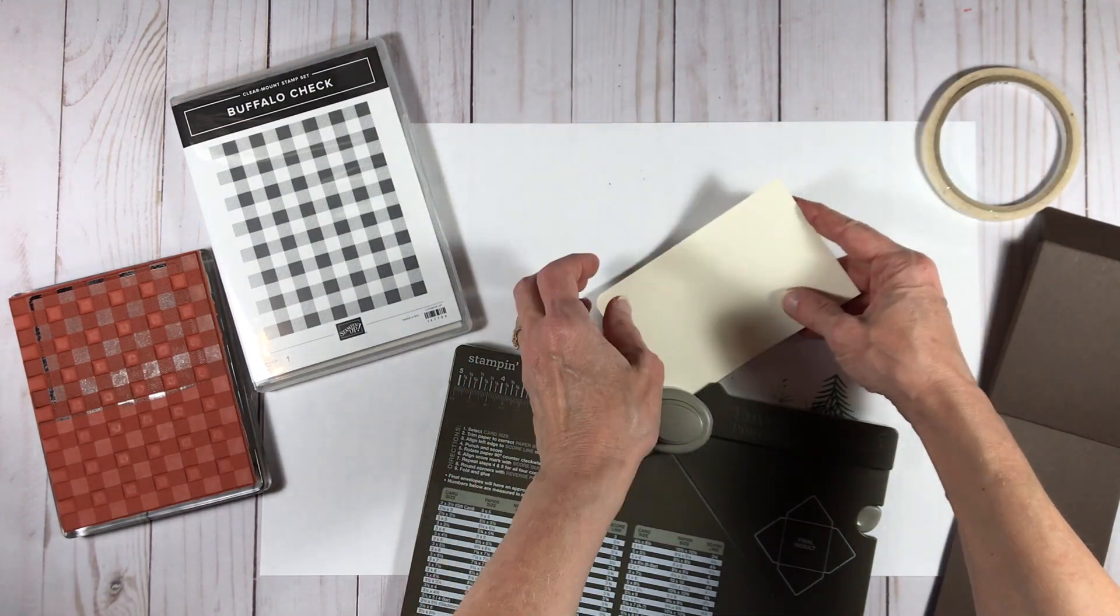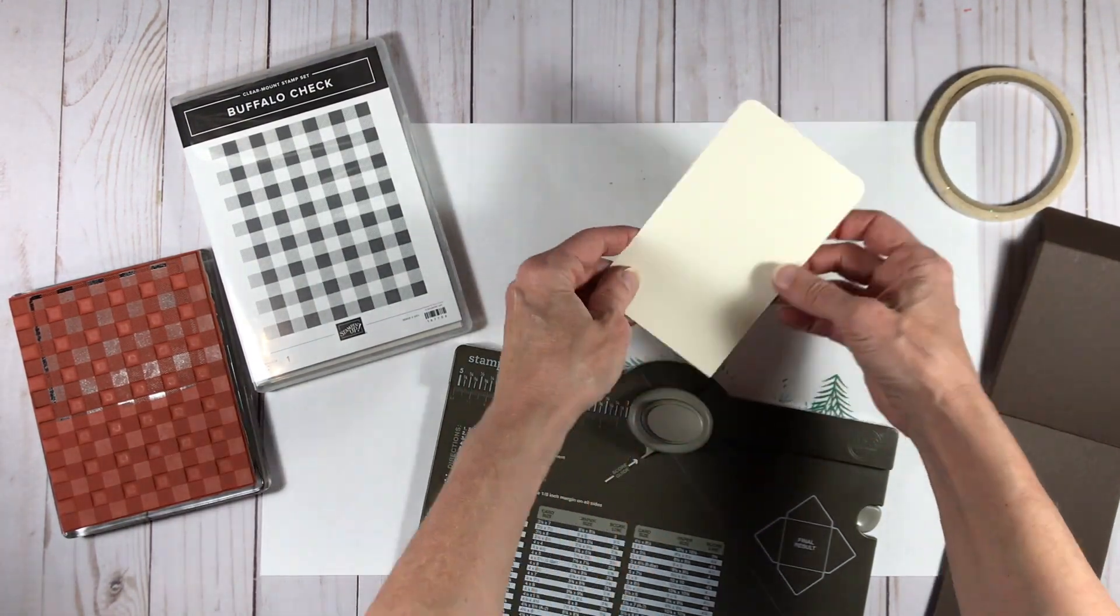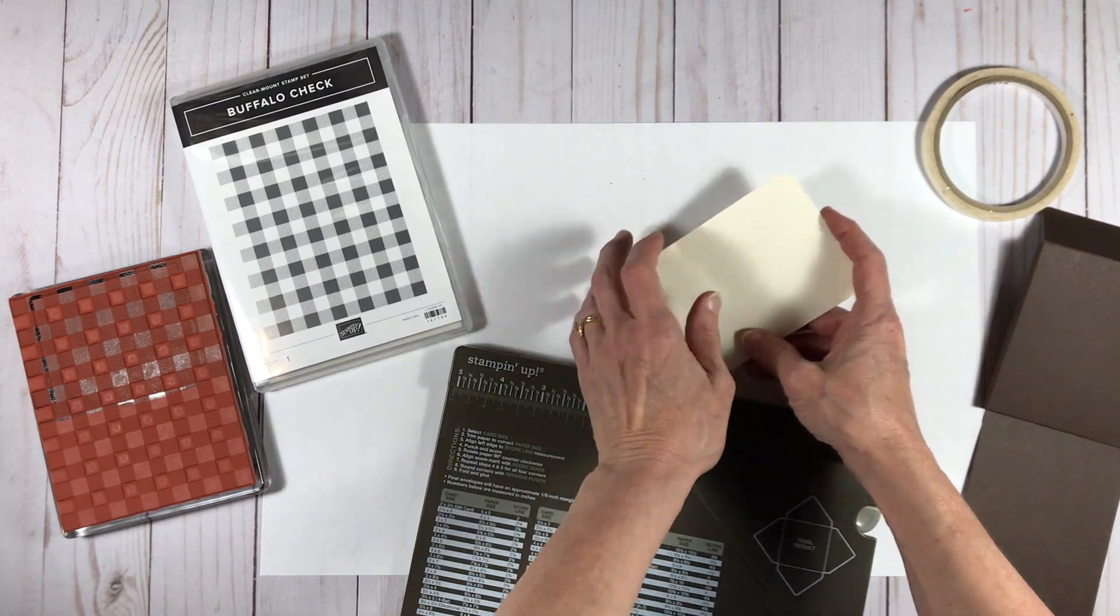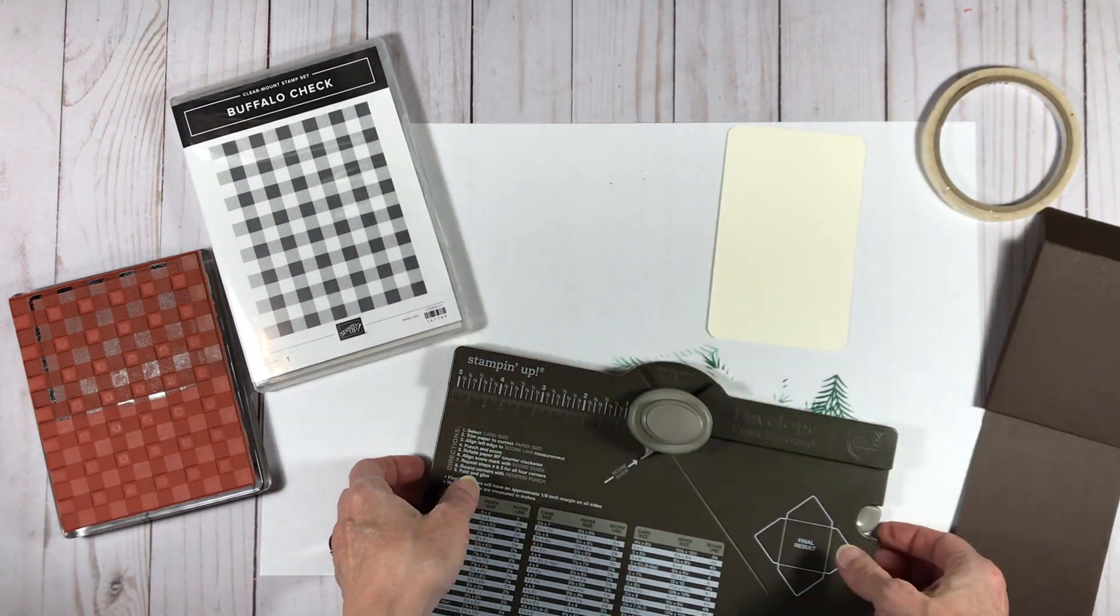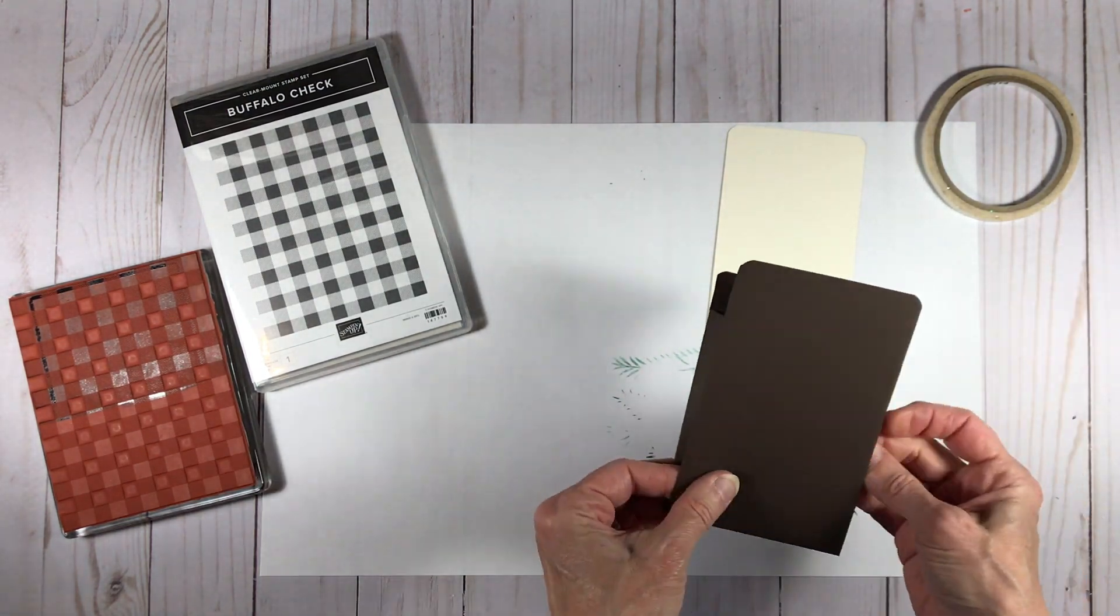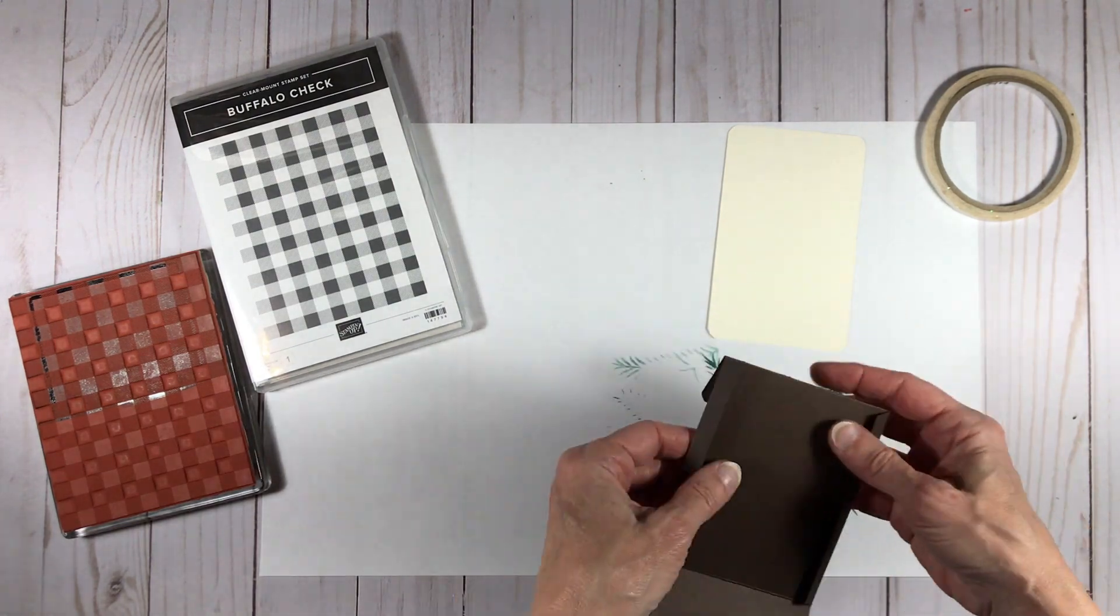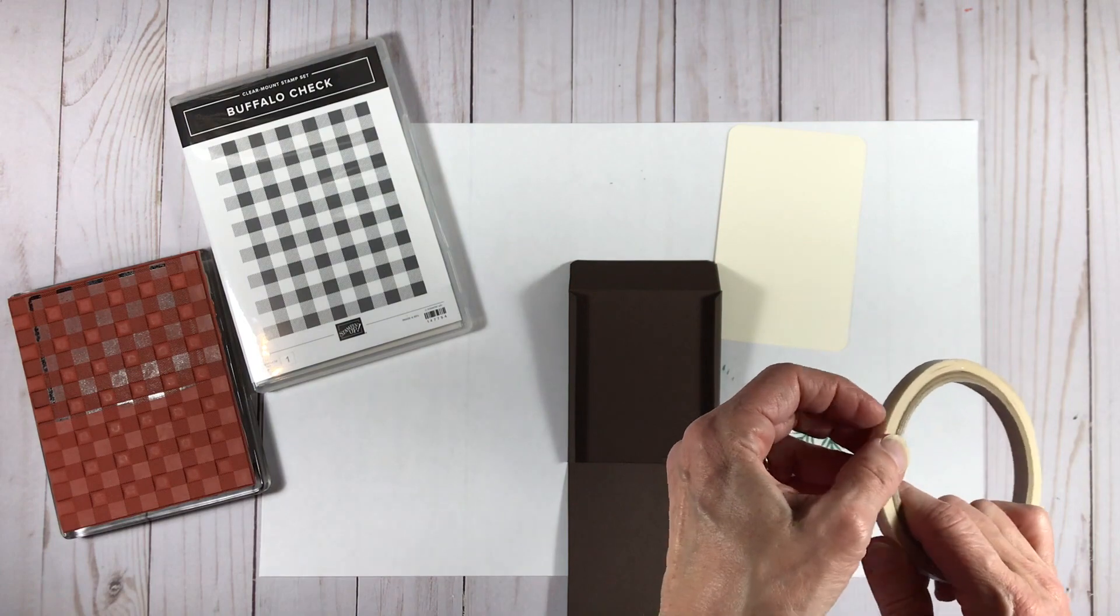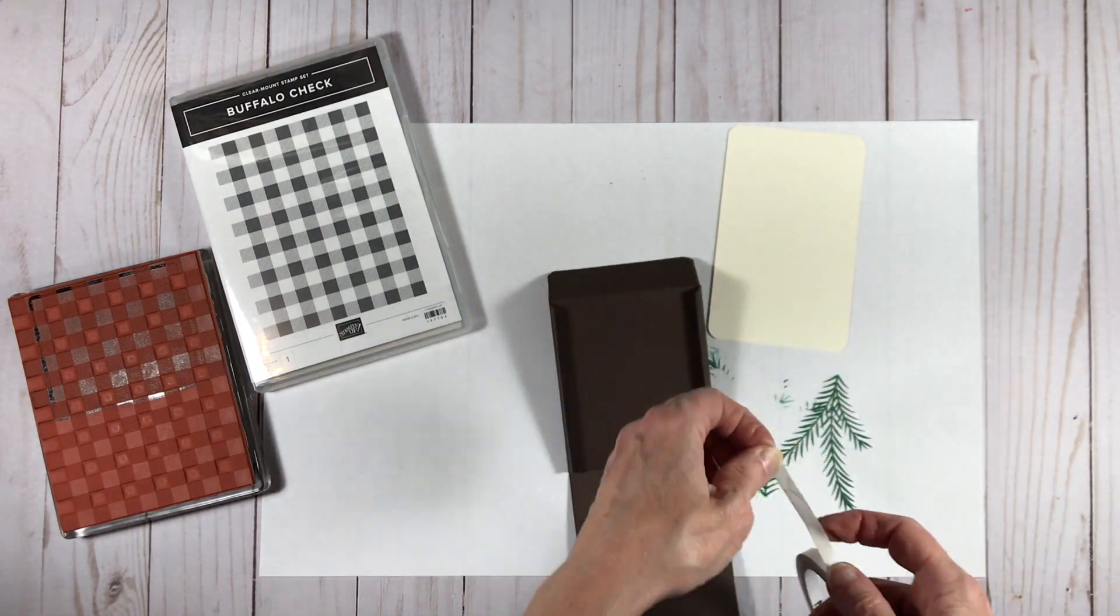This is the little insert piece that goes into the gift card holder, and this is what you would attach your gift card to, probably with a glue dot. Now what you see here is a vanilla piece, and in the end I ended up using a piece that was crumb cake. It kind of looked better with the design, so I'll probably bring that in at some point.